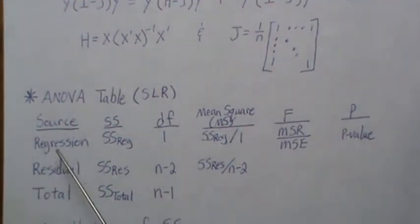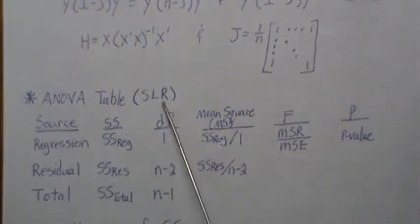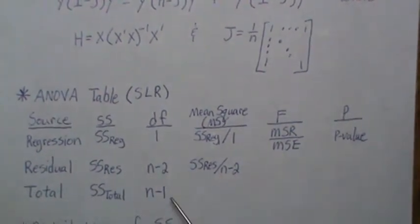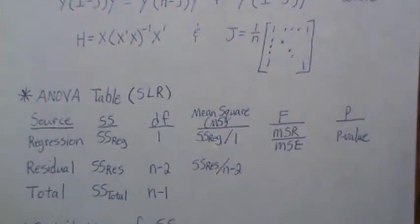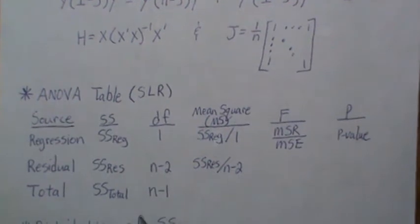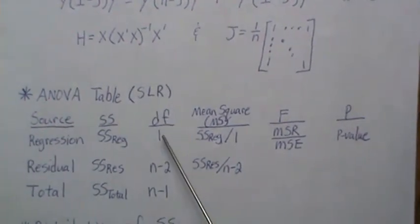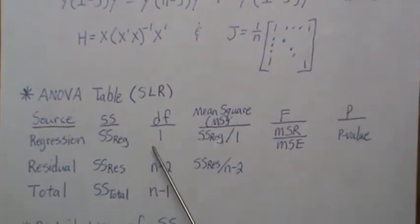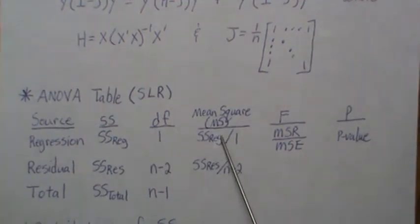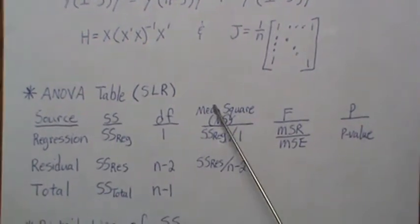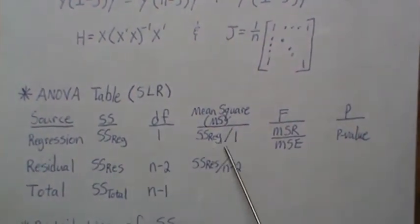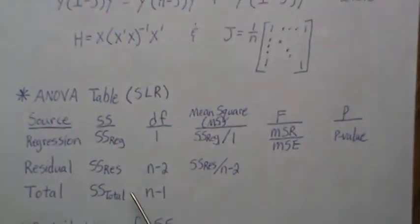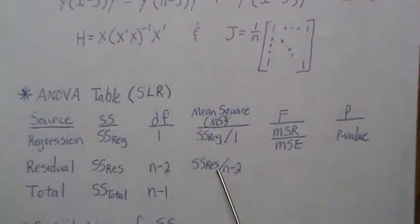This is the standard form of the ANOVA table. There's a source column — for simple linear regression it contains Regression, Residual, and Total. These are the sums of squares values you calculate. The degrees of freedom associated with those sums of squares: it's always 1 for regression in the simple linear regression case, n minus 2 for the residual, and n minus 1 for the total. If you take the sum of squares divided by degrees of freedom, that number goes in the mean square column.